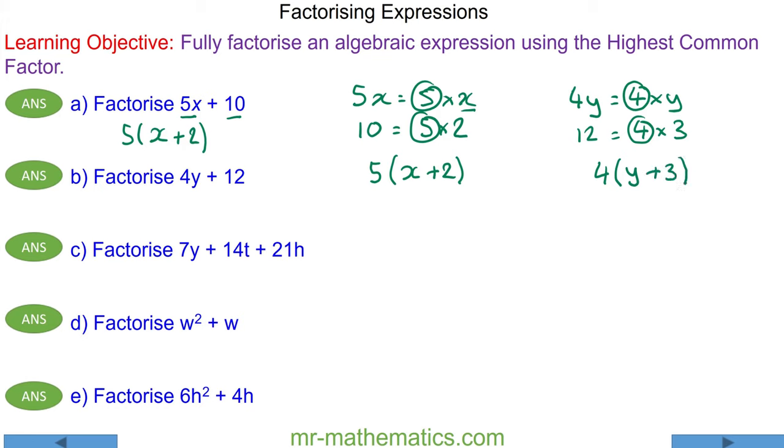For question C, 7y can be written as 7 times y. 14t is written as 7 times 2 times t, and 21h is written as 7 times 3 times h. And we can see that 7 is the highest common factor of each term. So 7 goes on the outside of the brackets, and on the inside we have y plus the 2 times t, or 2t, plus the 3 times h, or 3h.